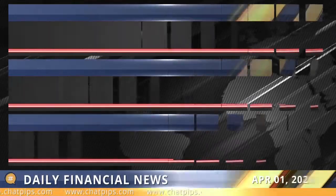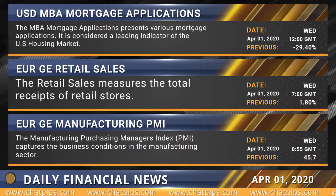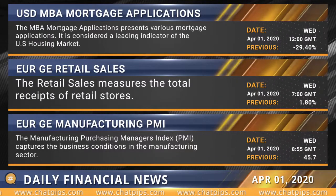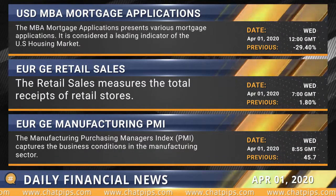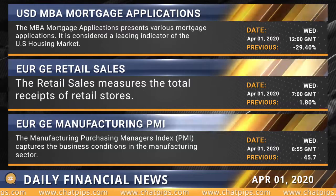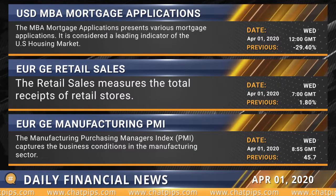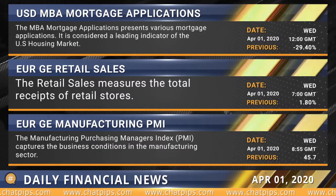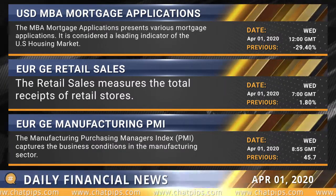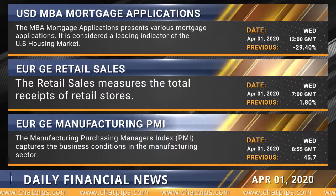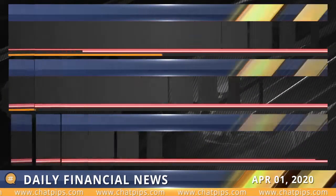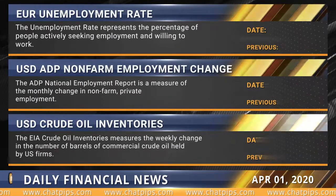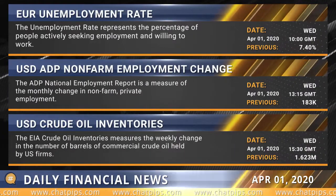And now, let's review some of today's world economic events. The U.S. MBA mortgage applications will be released at 1200 GMT. The German retail sales at 700 GMT. The German manufacturing PMI at 855 GMT. The Eurozone's unemployment rate at 1100 GMT.